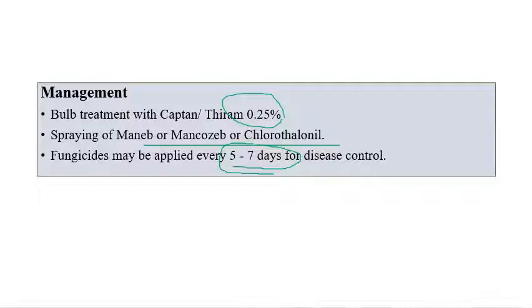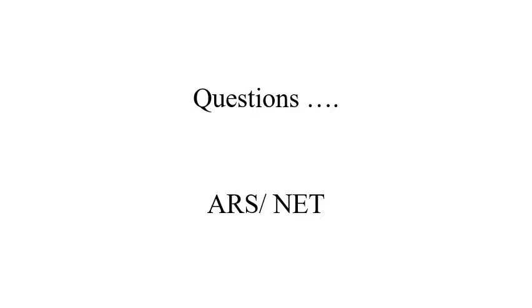For ARS or NET exam questions related to onion diseases: Purple Blotch of onion is caused by Alternaria porri; Pythium Root Rot involves three species — Pythium aphanidermatum, Pythium debaryanum, and Pythium ultimum. A very important question is that Onion Downy Mildew is caused by Peronospora destructor, which is frequently asked. These causal organisms are the most important ones to remember for onion diseases.